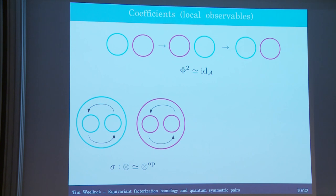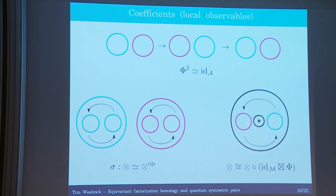Otherwise we might take the tensor product embedding and rotate the two disks. What results is a braiding natural isomorphism between the tensor product and the opposite tensor product. This of course reminds us very much of an E2 algebra. Now what's interesting is when we rotate these action embeddings around a singular point, once we end this rotation — which is like a half twist — the colors red and blue are interchanged.